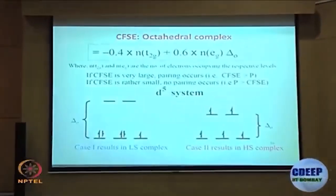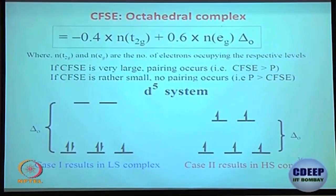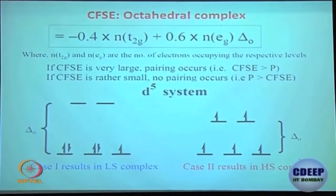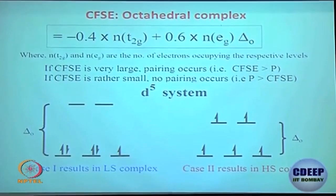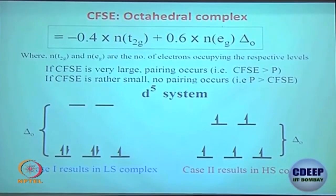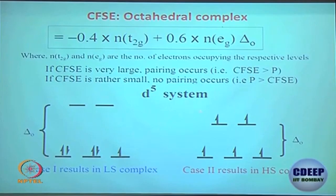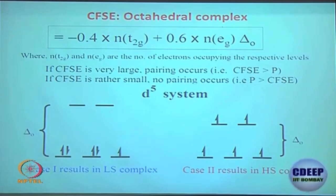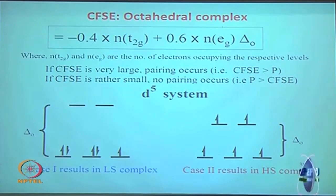For example, D⁵ high spin: 3 T₂g stabilized and 2 E_g destabilized, so CFSE = 0. For D⁷: take the d⁵ set (which cancels to zero), then deal with the remaining 2 electrons both in T₂g — giving −8 Dq or −0.8 Δ₀. For D⁷ low spin, with 5 electrons in T₂g contributing −5 × 0.4 Δ₀ = −2.0 Δ₀. You should be able to do these calculations quickly.